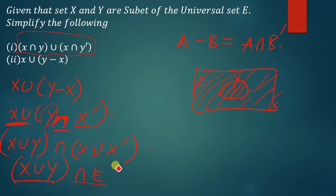So this set intersection the universal set, this will simply just give us the same set, which is x union y. So this is the simplified version of this set.